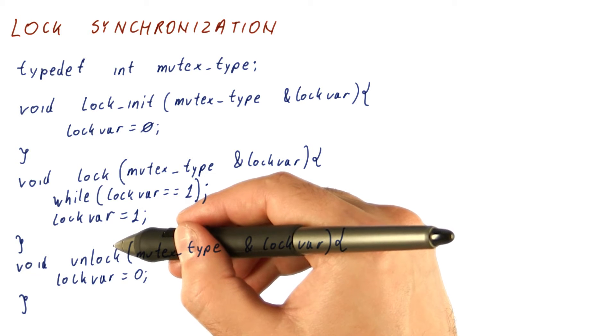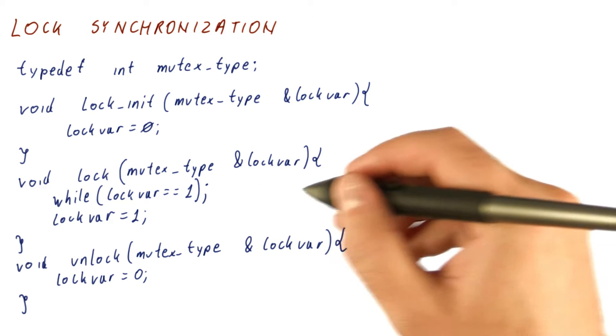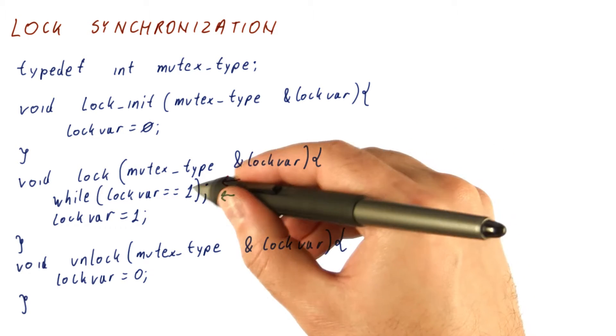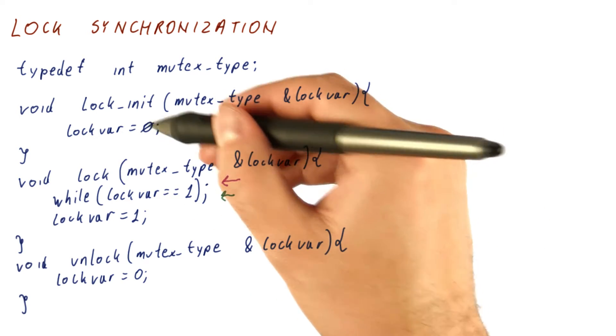But this lock function doesn't really work. Suppose you have two threads, the purple and the green, that come to this point at the same time. The lock was initialized to zero.